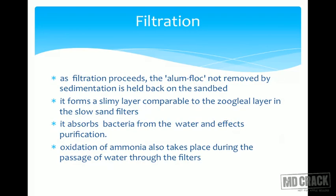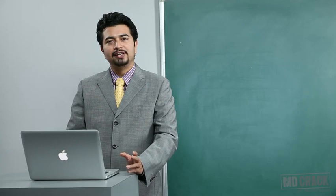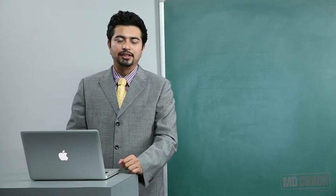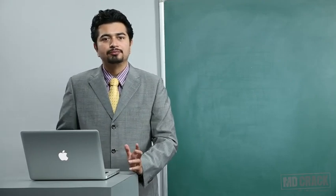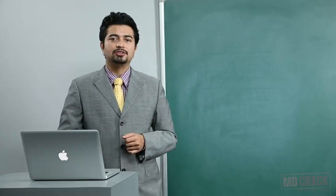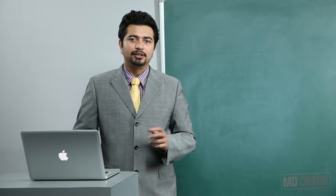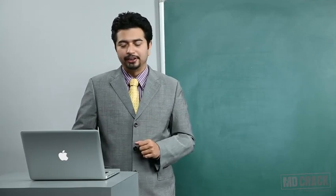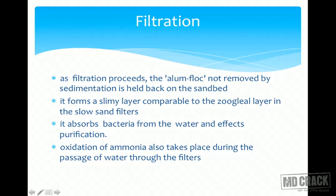Coming to the process of filtration: as filtration proceeds, the alum floc not removed by sedimentation is held back at the top of the filter. This alum floc layer above the sand filter is akin to the biological or zoological layer of the slow sand filter, although there is a great deal of difference between the two. The true biological layer in the slow sand filter did a lot of work, whereas this layer is not expected to perform those many functions.